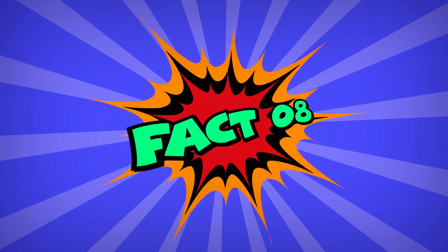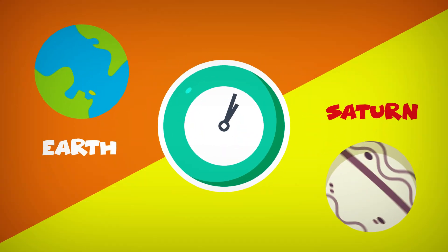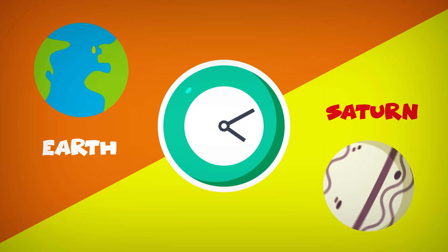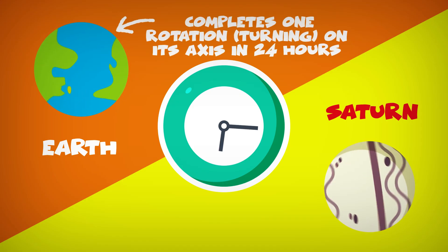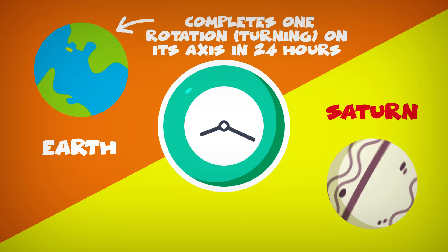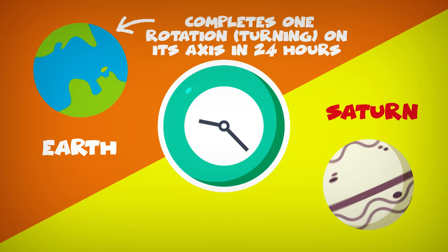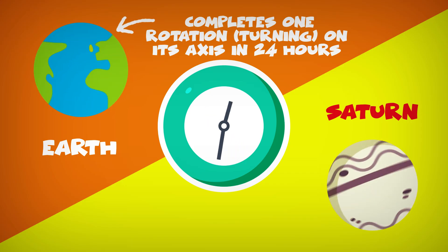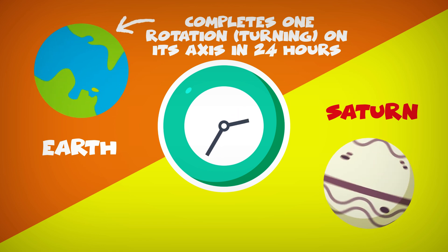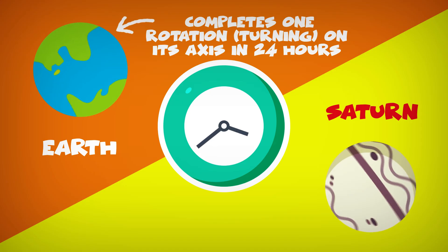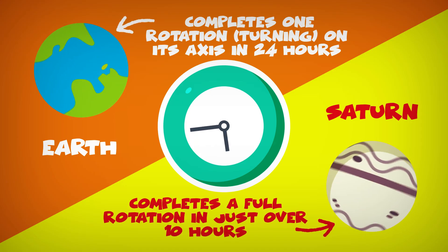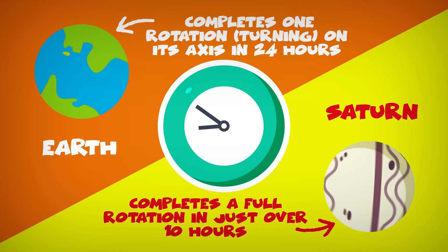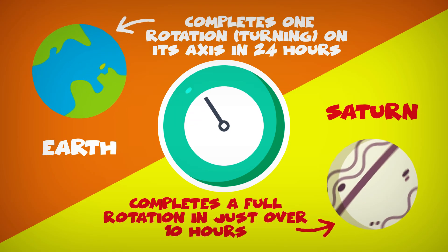Fact 8. James, did you know that Saturn spins much faster on its axis than the Earth? The Earth completes one rotation or turning on its axis in 24 hours, turning away from the Sun and back again to give us night and day. Saturn, although so much bigger, completes a full rotation in just over 10 hours! Wow!